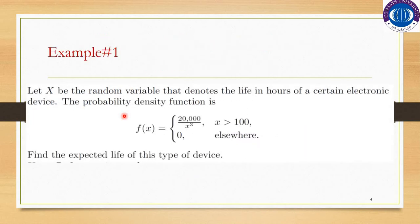Let me explain this through an example. Let x be the random variable that denotes the life in hours of a certain electronic device. The probability density function is f of x equals 20,000 over x cubed for x greater than 100, and 0 elsewhere. This means the function is defined only for x greater than 100, and substituting any value less than 100 gives an output of 0.